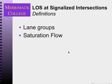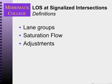Saturation flow is the maximum possible flow in a given lane or lane group, and that is in vehicles per hour of green. So it's the maximum flow due to geometrics and traffic, without regard to green time — we assume there's 100% green time with saturation flow. And there are some adjustments that we'll make to the saturation flow based on the makeup of the traffic and the geometry.